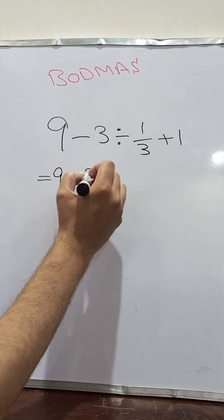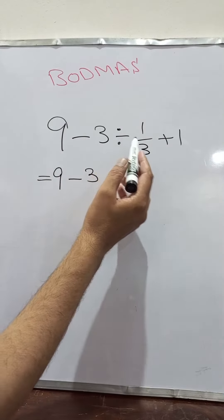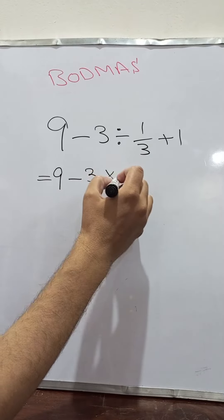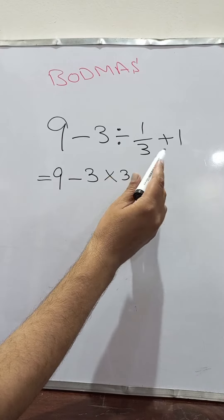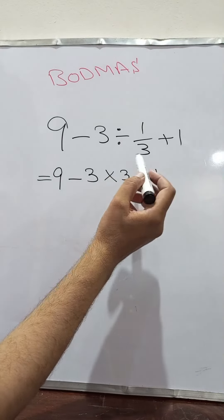9 minus 3 and this division becomes multiplication sign and we have to take reciprocal of 1 over 3 which becomes 3 plus 1.